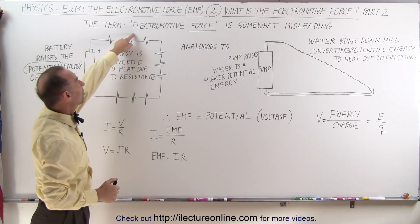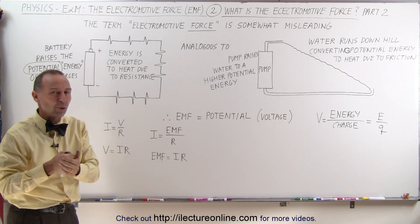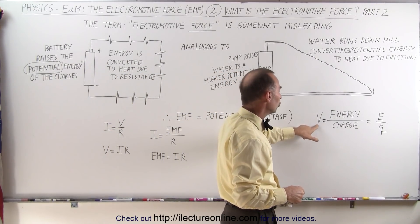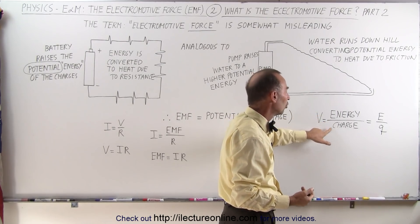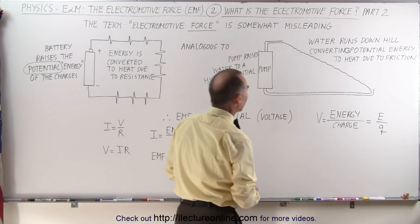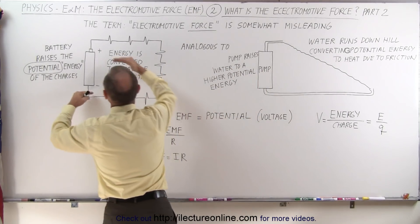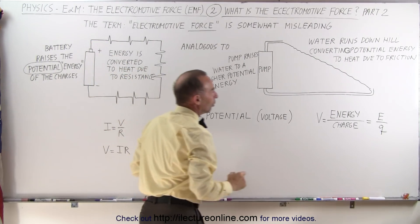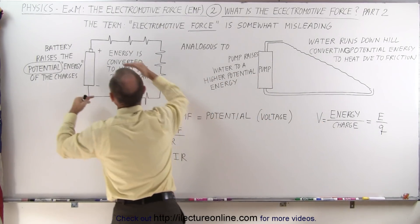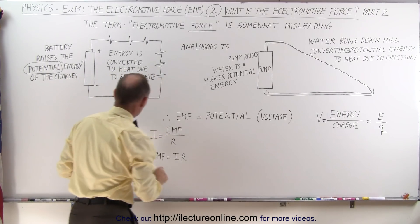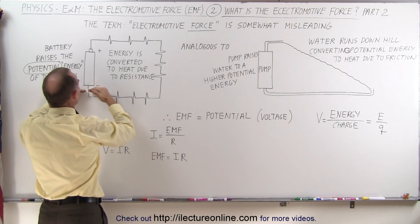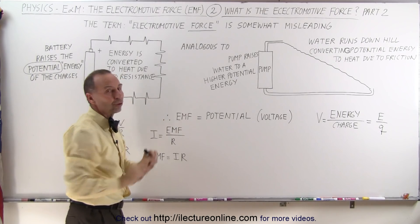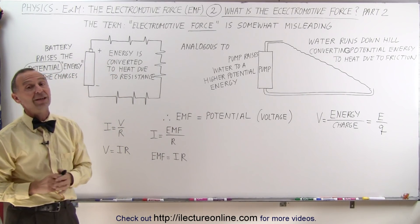So it's better to think of EMF as a type of voltage rather than a force pushing the electrons through. Notice that potential voltage can be defined as energy divided by charge, energy divided by Q. Electromotive force equals the energy gained by the charges divided by the charges, which means the gain in potential. So electromotive force can be thought of as the energy gained by the charges divided by the charge itself, which means potential or voltage. That's a better way to think of electromotive force.